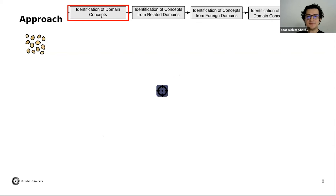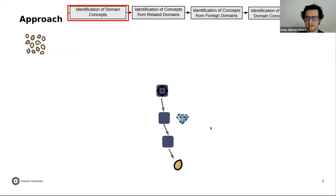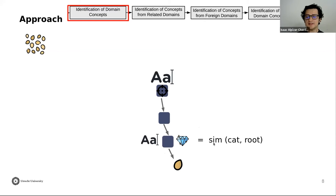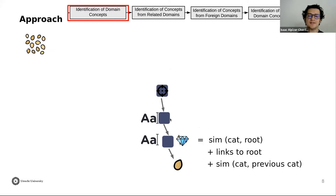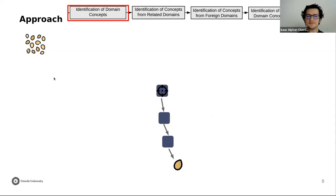In the next step — identification of domain concepts — we take each resource from the seed resources group and find the path connecting the root domain to this resource using only subcategories. For each category in this path, we compute a score measuring the similarity between all resources of the category against the root domain. We also use information about how many resources link directly to the root domain, and the similarity between this category and the previous category in the path. Because this resource belongs to the seed set, we classify it as part of the domain, and we do that for all remaining resources in this group.